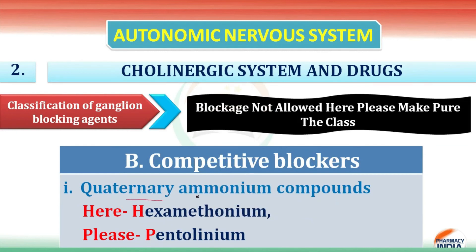The second class is competitive blockers. The first subcategory is quaternary ammonium compounds. 'Here' indicates hexamethonium, and 'please' indicates pentolinium. That covers the quaternary ammonium competitive blockers.